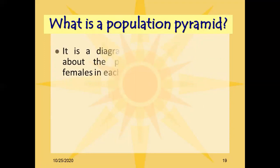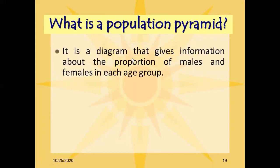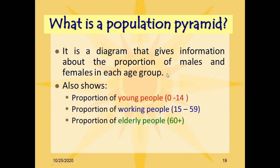A population pyramid is a diagram that gives information about the proportion of males and females in each age group. It shows the proportion of young people from 0 to 14 years, the proportion of the working age group from 15 to 59 years, and the proportion of elderly people aged 60 and above.